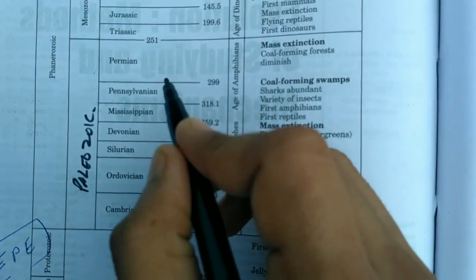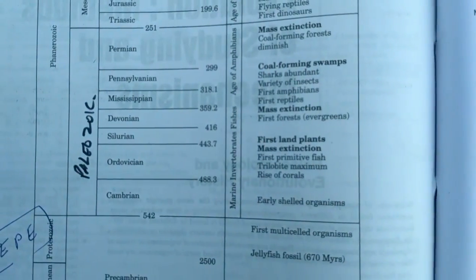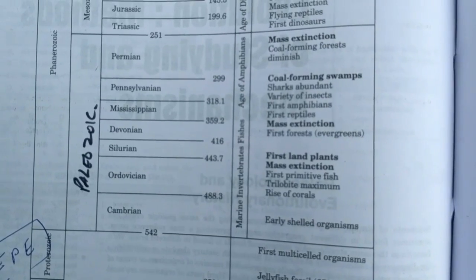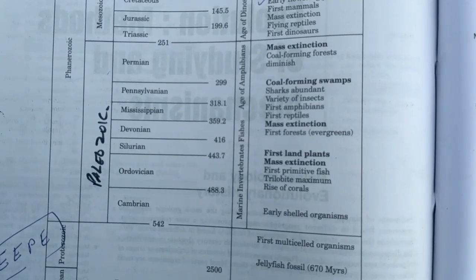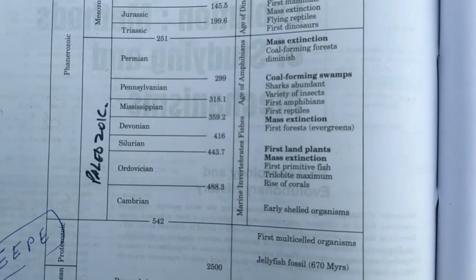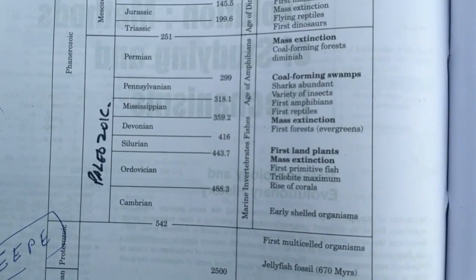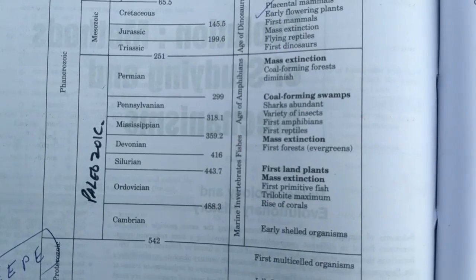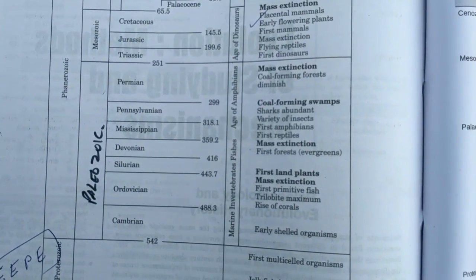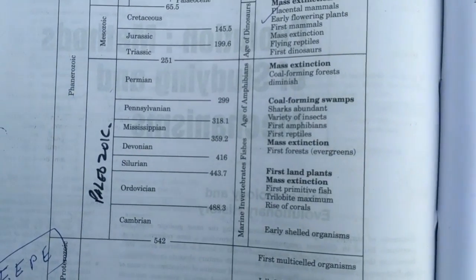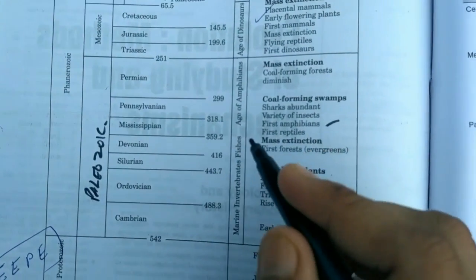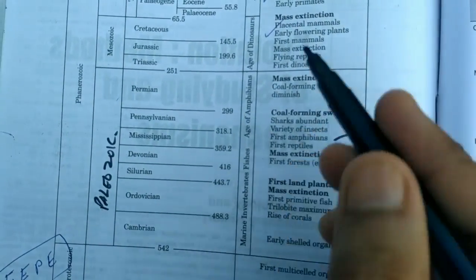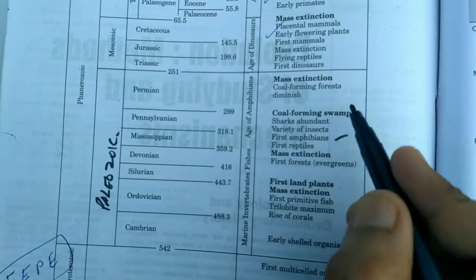In the Cambrian: early shelled organisms. Ordovician: first land plants, mass extinction, first primitive fish-like creatures appeared. Silurian: mass extinction, first forests, evergreens. Devonian: coal-forming swamps, sharks abundant, variety of insects, first amphibians and reptiles appearing from Devonian to Pennsylvanian.